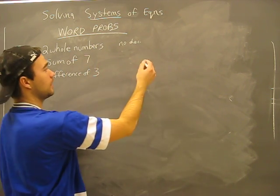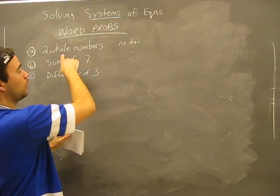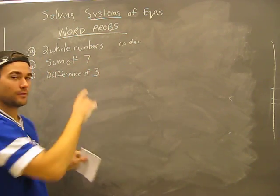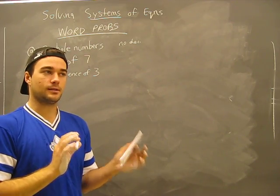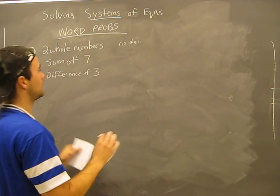Sum of seven. We don't know what the numbers are. They're whole numbers and they add up to seven, so that means they cannot be the same number. Like three plus three would be six, four plus four would be eight. It can't be the same number.